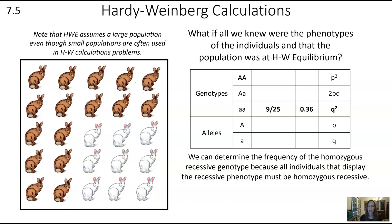The only way to get a white-coated bunny is to have two copies of that recessive allele, so nine out of the 25 bunnies must be little a little a. In terms of frequency, that's 9 divided by 25, or 0.36. In Hardy-Weinberg equations, we represent that as q squared — the likelihood of getting a recessive allele times the likelihood of getting a recessive allele. Also note that Hardy-Weinberg equilibrium assumes a large population, even though many calculations are done on fairly small populations.